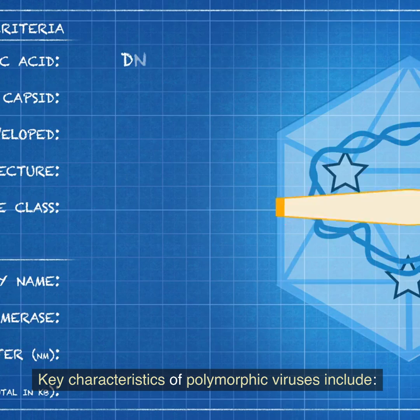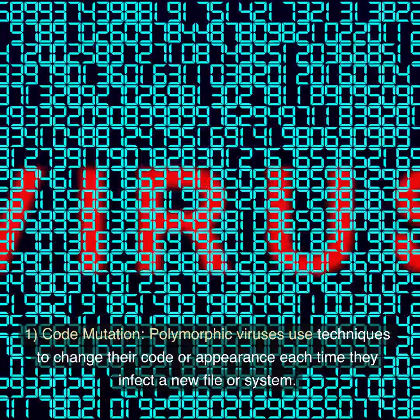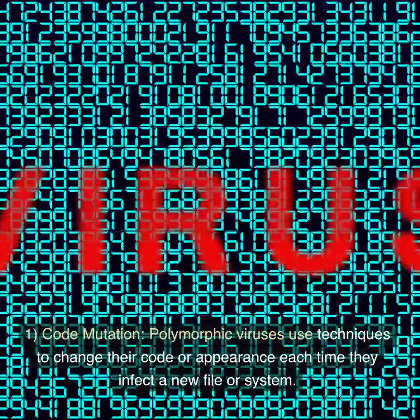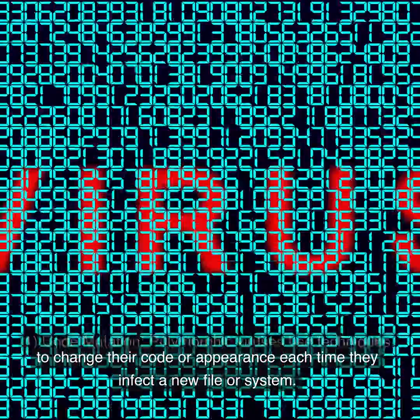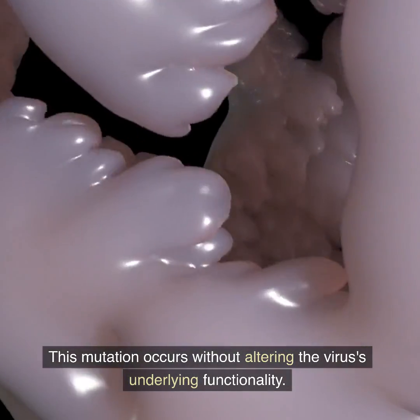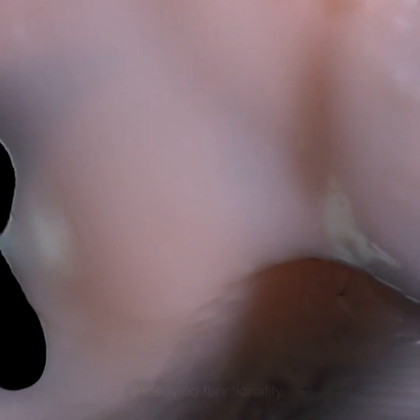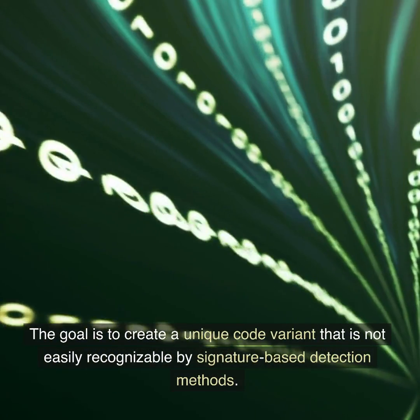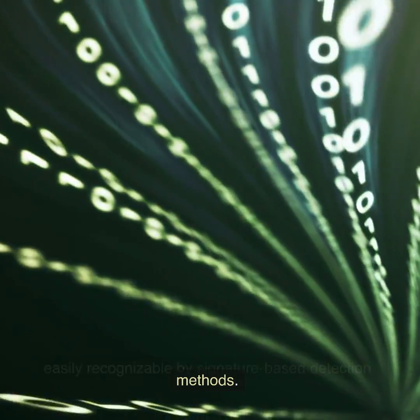Key characteristics of polymorphic viruses include: 1. Code mutation. Polymorphic viruses use techniques to change their code or appearance each time they infect a new file or system. This mutation occurs without altering the virus's underlying functionality. The goal is to create a unique code variant that is not easily recognizable by signature-based detection methods.